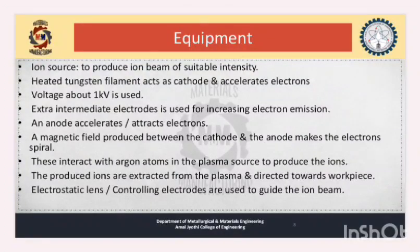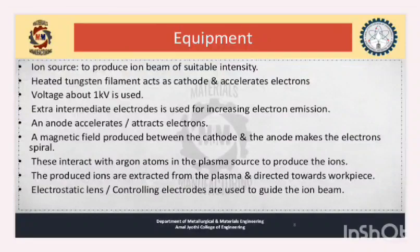The equipment used includes: first, an ion source, which is used to produce an ion beam of required density. The heated tungsten filament acts as a cathode and accelerates electrons. A voltage of about 1 kV is used. An extra intermediate electrode is used for increasing electron emission, and an anode is used to attract the electrons. The magnetic field produced between the cathode and anode makes the electrons spiral, and these interact with argon atoms in the plasma source to produce the ions.